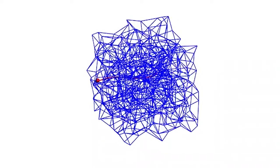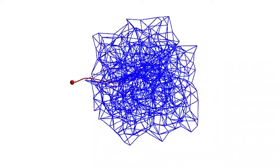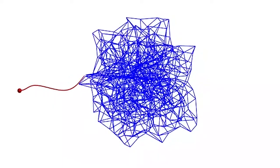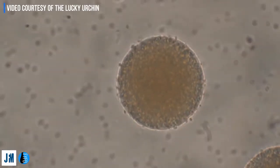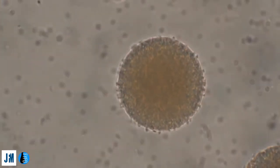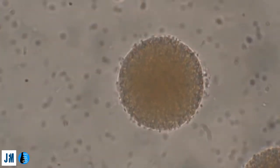Beyond the physiological implications, there are many interesting fluid mechanics questions. The environment that a sperm moves through is not a simple environment — it's moving through female chambers that are themselves undergoing muscular contractions, and also through complex fluid environments with embedded polymeric structures.